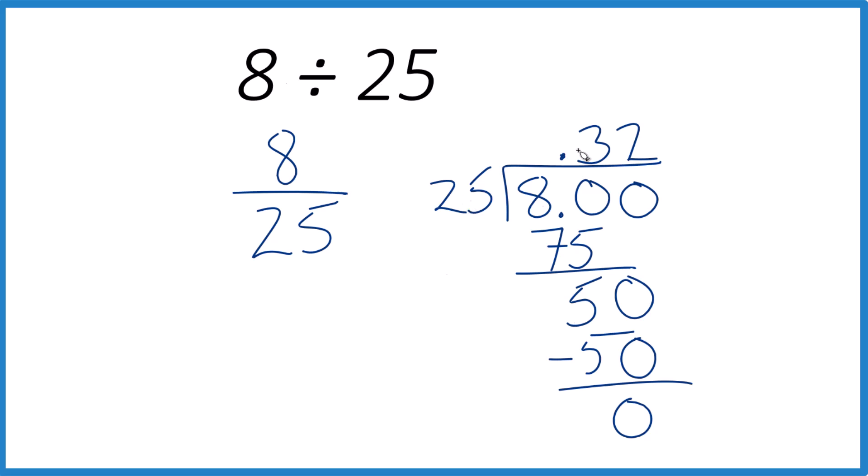8 divided by 25 is 0.32. We usually put a 0 out here just to make it clear. If you take 0.32 and you multiply it by 25, you'll get 8.